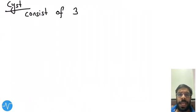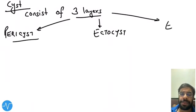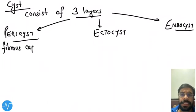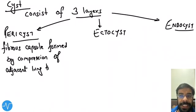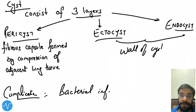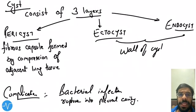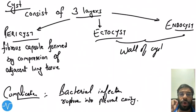The hydatid cyst consists of three layers: pericyst, ectocyst, and endocyst. The pericyst is a fibrous capsule formed by compression of adjacent lung tissue. The ectocyst and endocyst are the wall of the cyst itself, formed by the organism. Complications include bacterial infection or rupture into the pleural cavity. In summary, the pericyst is formed by human lung tissue, while ectocyst and endocyst are formed by the cyst organism itself.